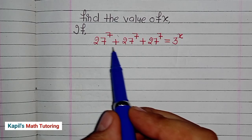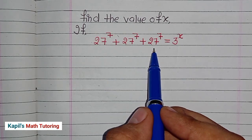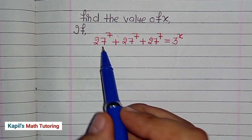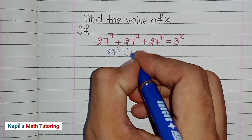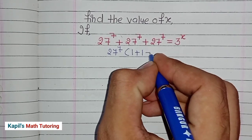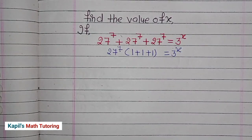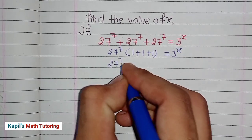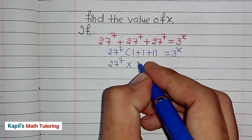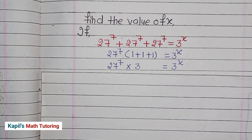I can take 27 to the power 7 as a common factor from all three terms. So I can write 27 to the power 7, multiplied by 1 plus 1 plus 1, equals 3 raised to the power x. That gives us 27 to the power 7 multiplied by 3, equals 3 raised to the power x.